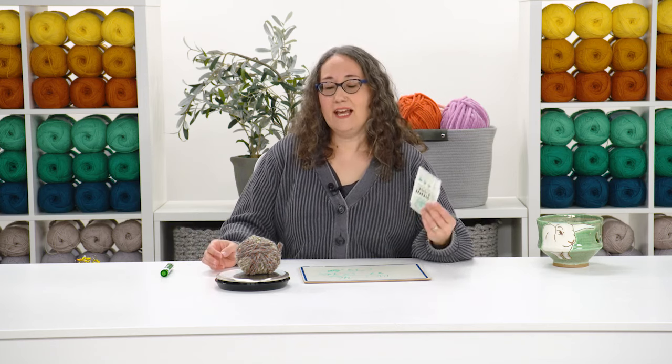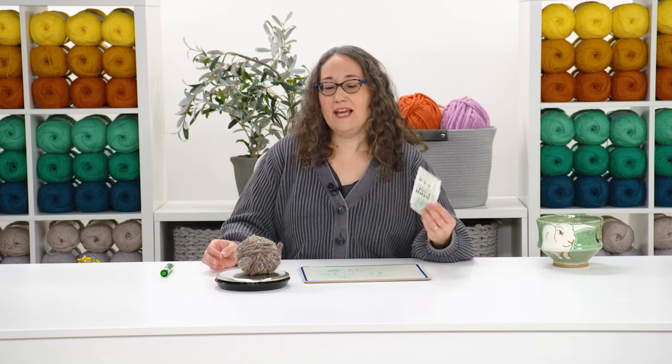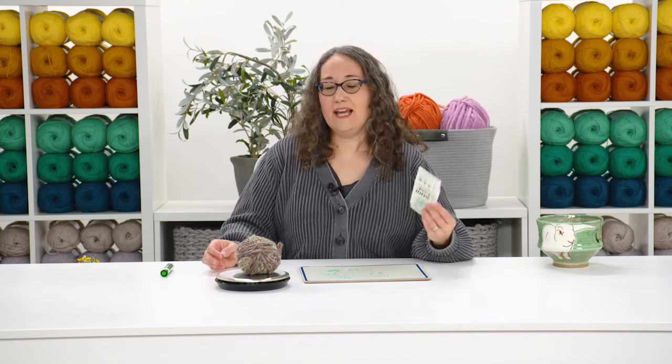This is an awesome way to figure out how much yarn you have left. If you can't find the ball band information, you can give yourself a fairly good estimate by just spooling off about 10 yards of your yarn. If it's a bulky weight, maybe you could do a little less. If it's worsted weight or something thinner, at least 10 yards.